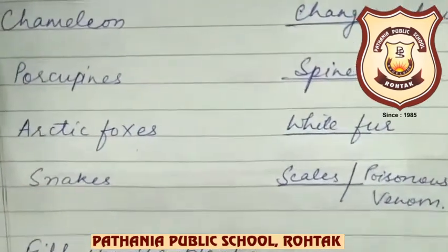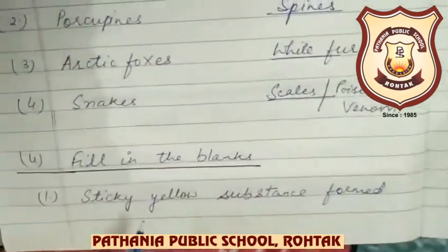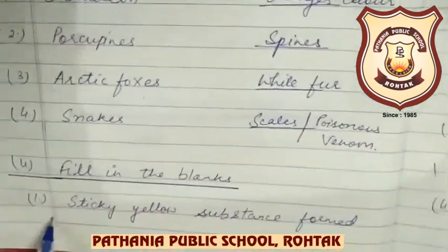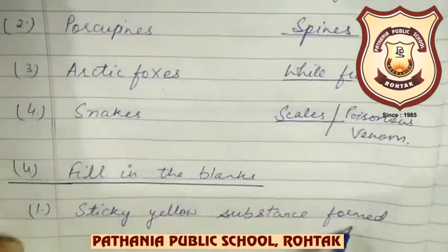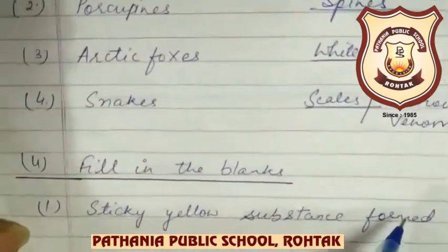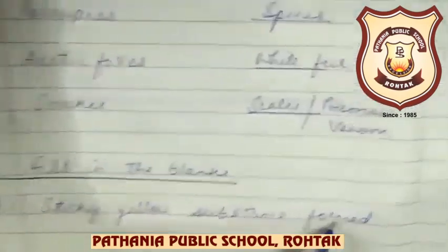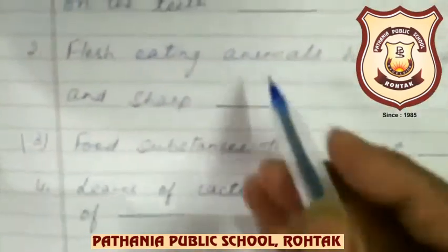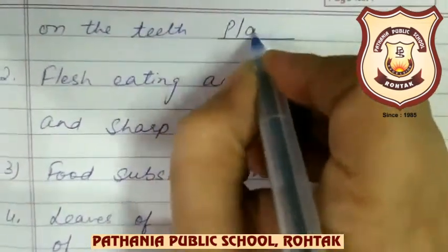Both scales and venom — poisonous venom. Now fill in the blanks, question four. A sticky yellow substance formed on the teeth when you do not take proper care of your teeth — that is called Plaque.